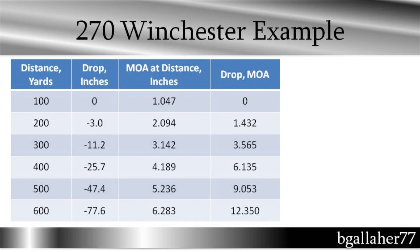What you do is take your drop in inches and divide it by the minute of angle in inches at that distance, and then you get your drop in minute of angle. So at 300 yards, with 11 inches of drop, and 3 inches being 1 minute of angle at 300 yards, you get a drop of 3.5 minutes.